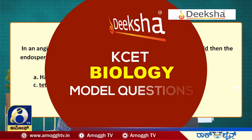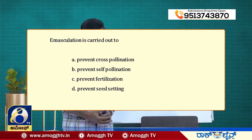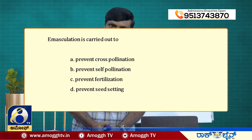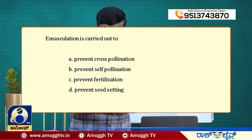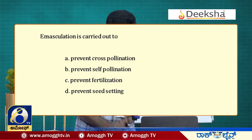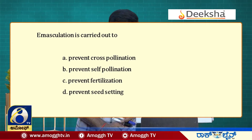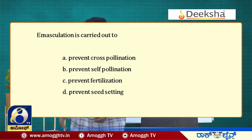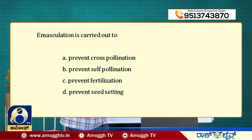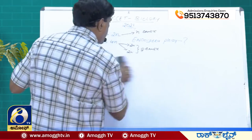The next question: emasculation is carried out to — (A) prevent cross-pollination, (B) prevent self-pollination, (C) prevent fertilization itself, (D) prevent seed setting. Emasculation is a procedure carried out in a breeding experiment.